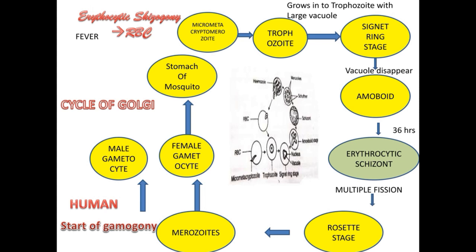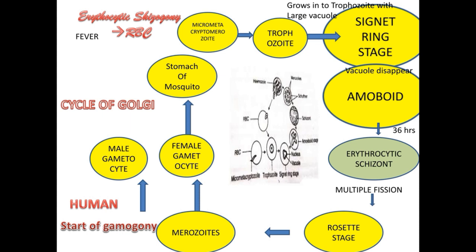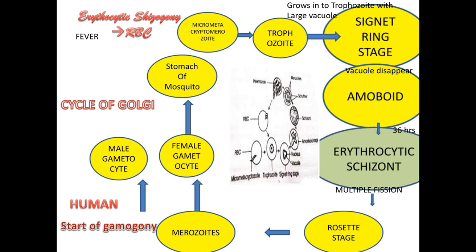Next is erythrocytic schizogony, which occurs in the RBC. The micro-metacryptomerozoite enters the RBC and changes into the trophozoite, which grows into a large trophozoite with a large vacuole, then changes into the signet ring stage. After that, the vacuole disappears and it becomes irregular in shape, named the amoeboid stage.